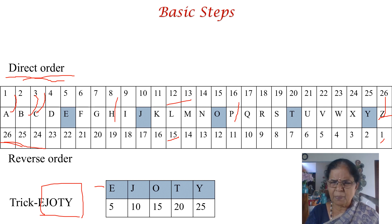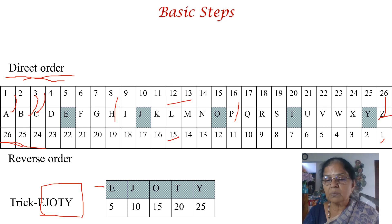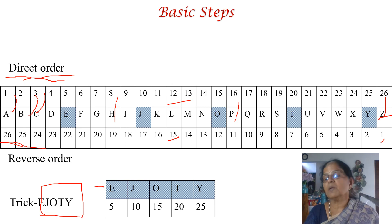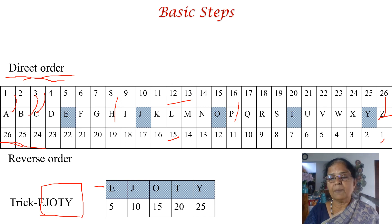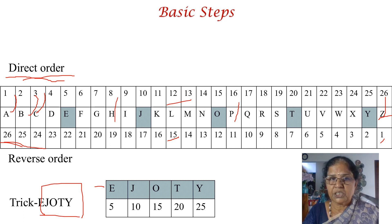If you remember EJOTY you can keep this in memory. It is not advisable to remember all the individual letter-number correspondences. Draw this table immediately because we are going to use it in the calculations.